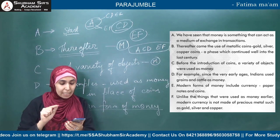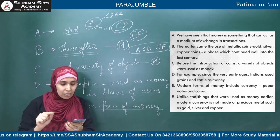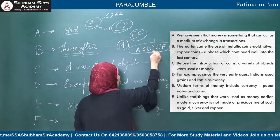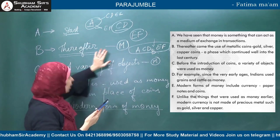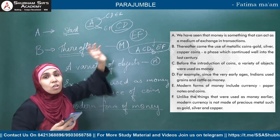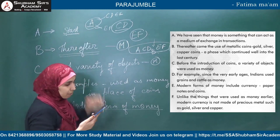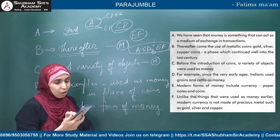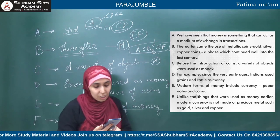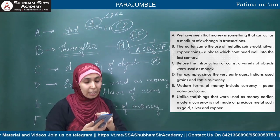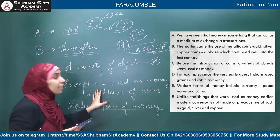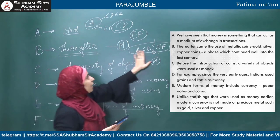B says 'thereafter came the use of metallic coins.' 'Thereafter' — after what? After grains and cattle (D), metallic coins came. So B is sandwiched between D and E. The correct sequence is A, C, D, B, E, F. A introduces money, C says varieties of objects were used before coins, D gives examples of grains and cattle, B says thereafter came metallic coins, E introduces modern currency, and F explains modern currency is not made of precious metals.